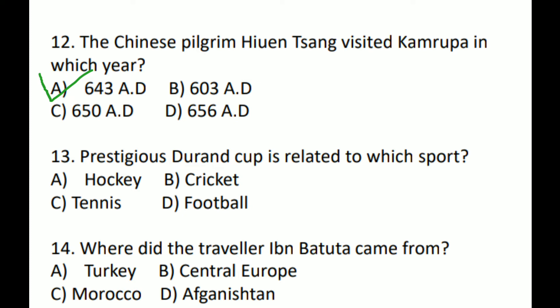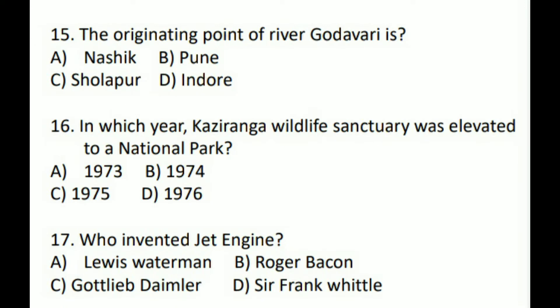Prestigious Durand Cup is related to which sport? The answer is Option D — Football. Next question: Where did the traveler Ibn Battuta come from? He came from Morocco. Option C.